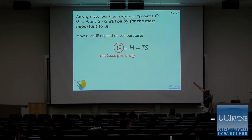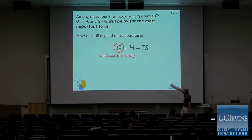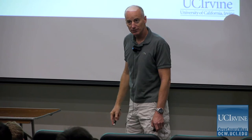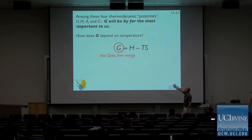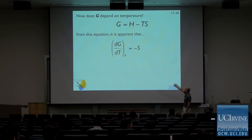Among the four thermodynamic potentials U, H, A, and G, G will be by far the most important to us. How does G depend on temperature? That's a rather important thing to understand, because as chemists, if we want to accelerate a reaction, G tells us whether the reaction is spontaneous, and we want to understand how temperature influences that spontaneity. G equals H minus TS, so taking the derivative DG/DT at constant P, even I can take this derivative: I get minus S.